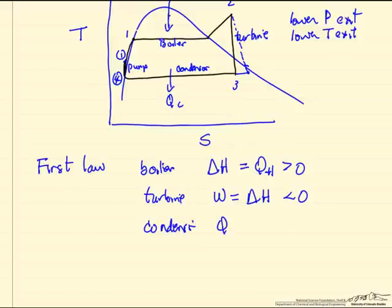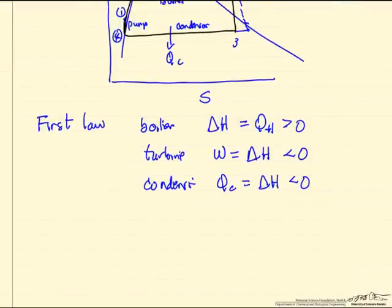The condenser, QC is equal to delta H, and again delta H is negative, we're taking work out.